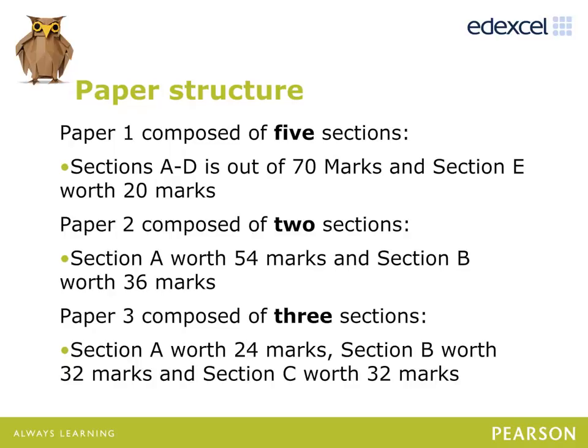Section A of Paper 2 is worth 54 marks and comprises mixed question types including data response, short answer questions and a 20-mark essay question. Section B is worth 36 marks and comprises mixed question types including data response, short answer and extended response questions. Paper 3 is composed of 3 sections worth 80 marks in total. Section A is worth 24 marks and comprises mixed question types including data response and short answer questions. Sections B and C are each worth 32 marks and comprise two extended response questions each.